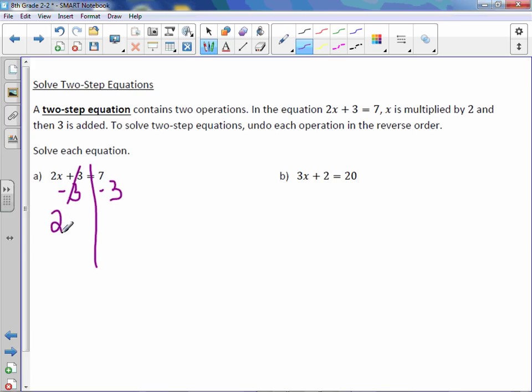On the left-hand side, you would have 2x equals, and 7 minus 3 is 4. From here, we solve as usual. Divide both sides by 2, and x equals 2.